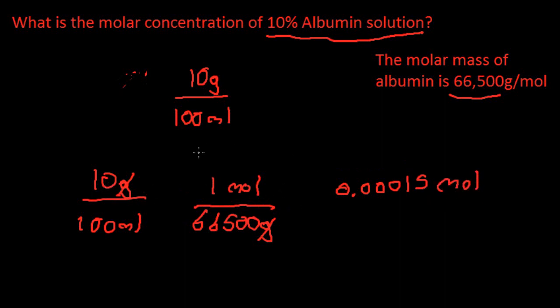So because we divided the 10 by the 66,500 down there, it became 0.00015 moles. And we still have the 100 milliliters down here.